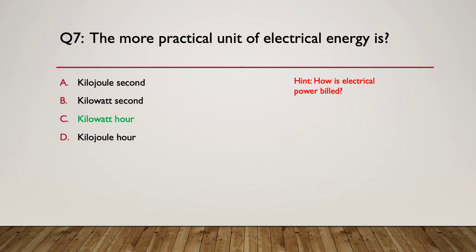The answer is kilowatt hours. Thousands of watts per hour is the most useful. If you were to use kilowatt seconds, the number would be huge. And if it was kilojoule seconds, we'd have to find some way of converting kilojoules to kilowatts, so on and so forth. Kilowatt hour is the most practical.